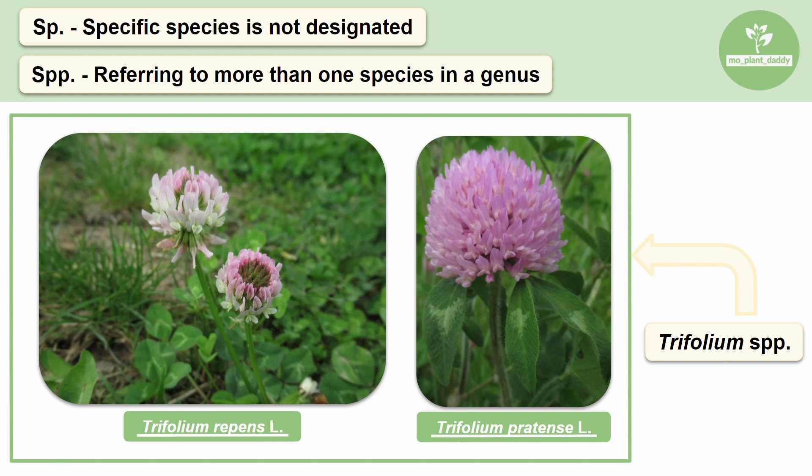Notice that neither sp. nor spp. is italicized. Only the genus and specific epithet get italicized.